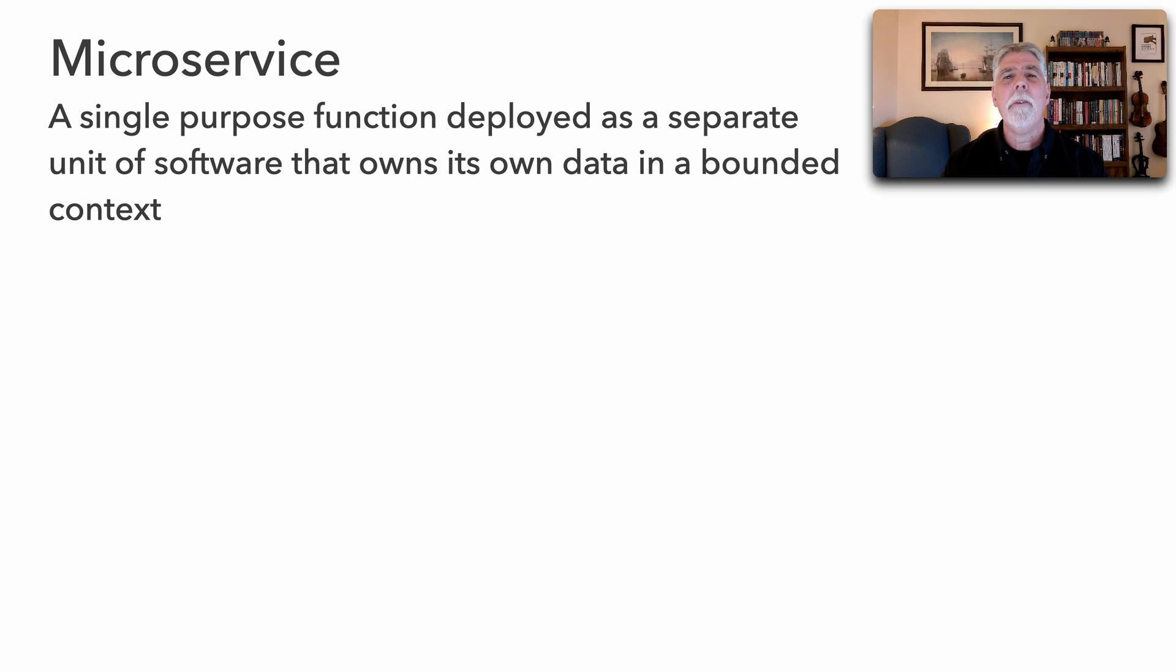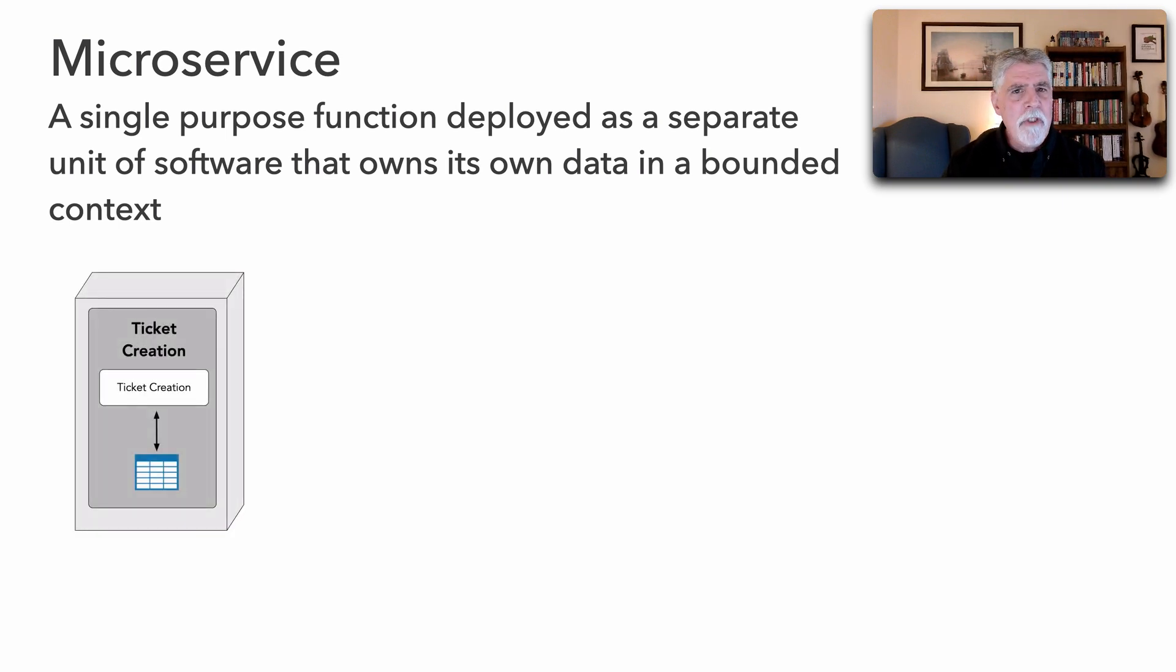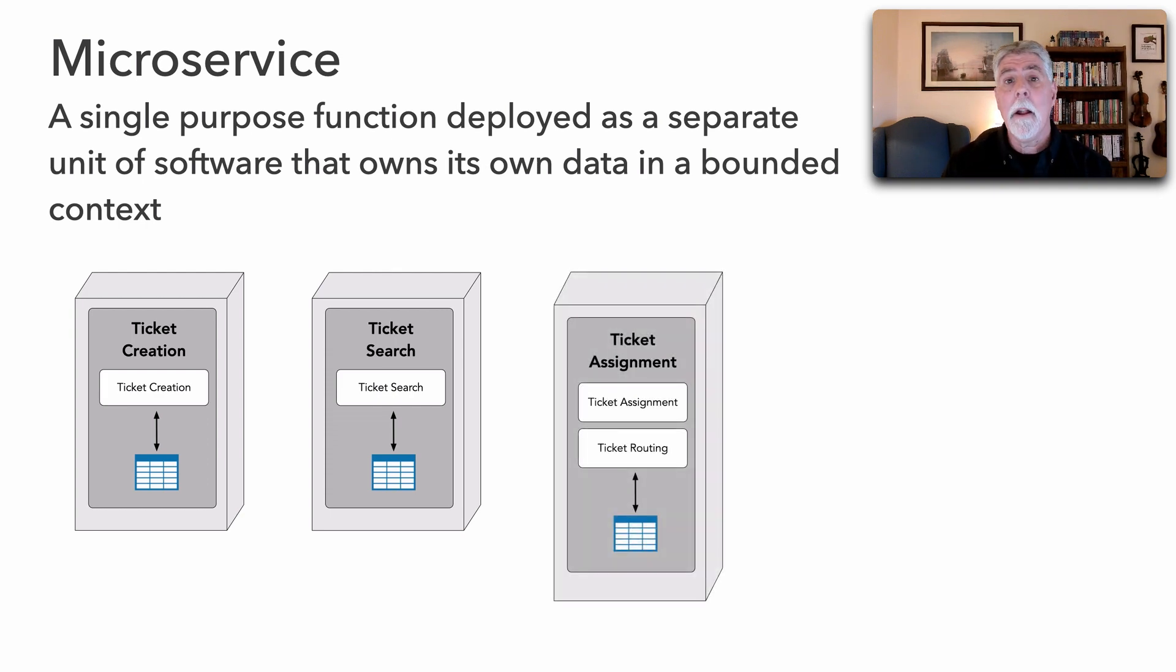Let's define a microservice and see how it differs. A microservice is defined as a single purpose function deployed as a separate unit of software that owns its own data in a bounded context. For example, maybe just ticket creation alone, or ticket search. Ticket assignment might also be single purpose, although it combines routing. This shows that multiple components can still exist in a microservice.